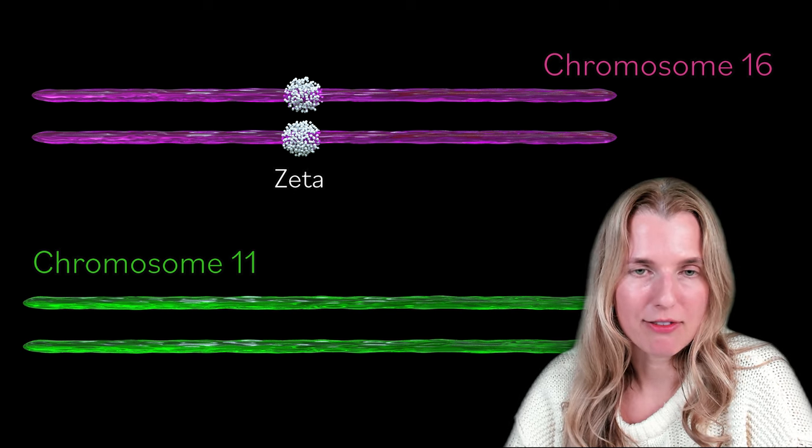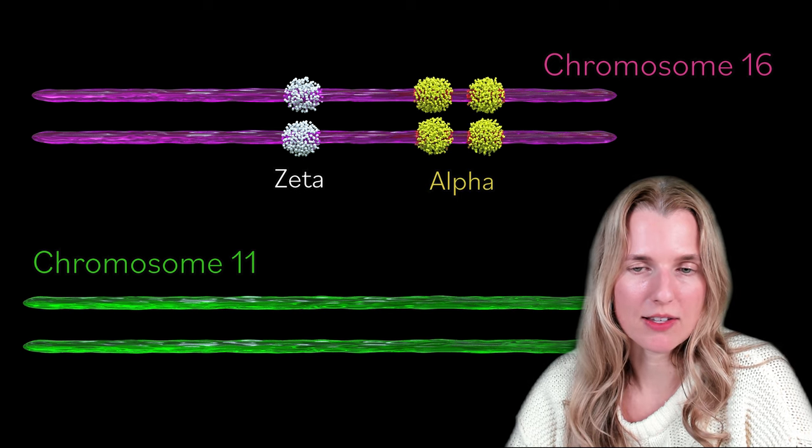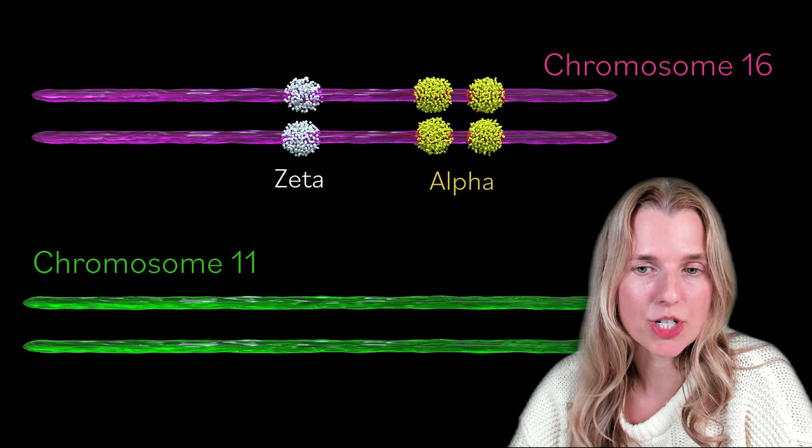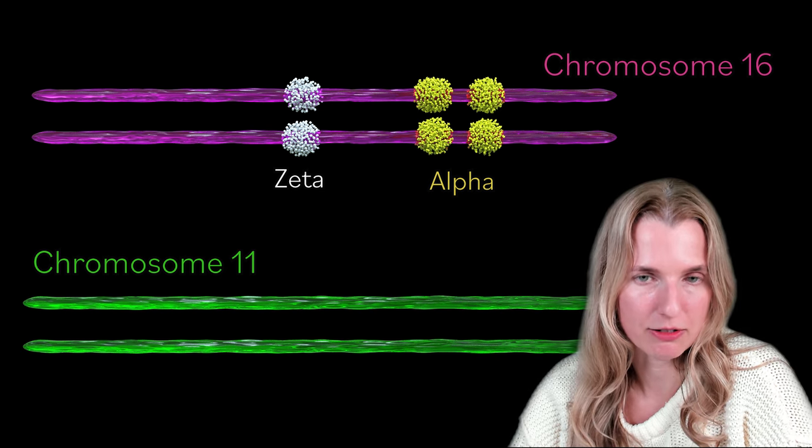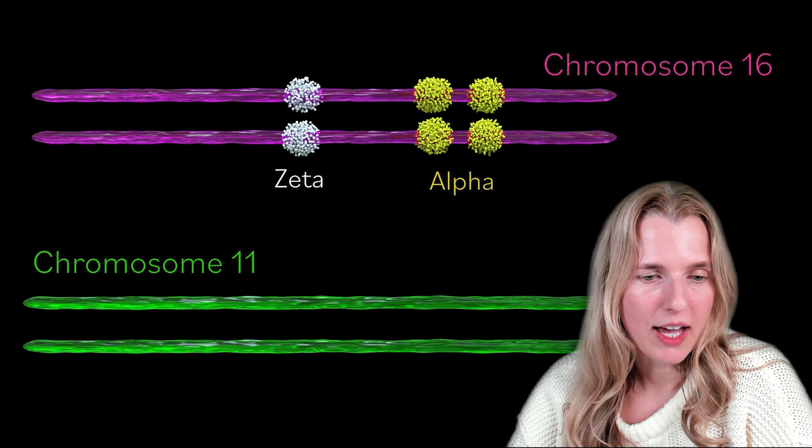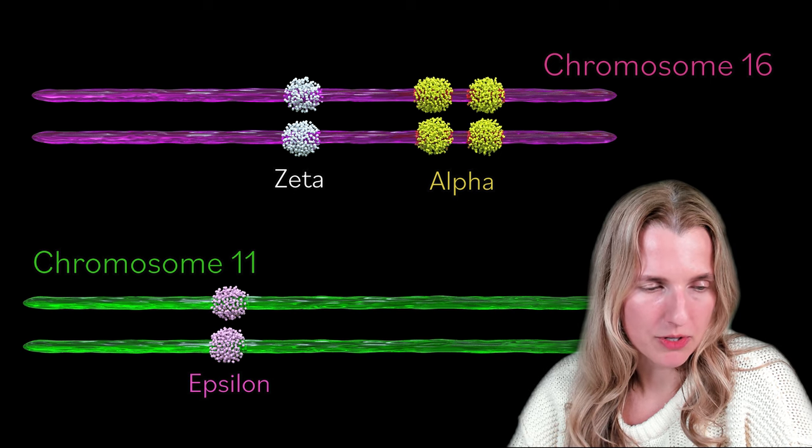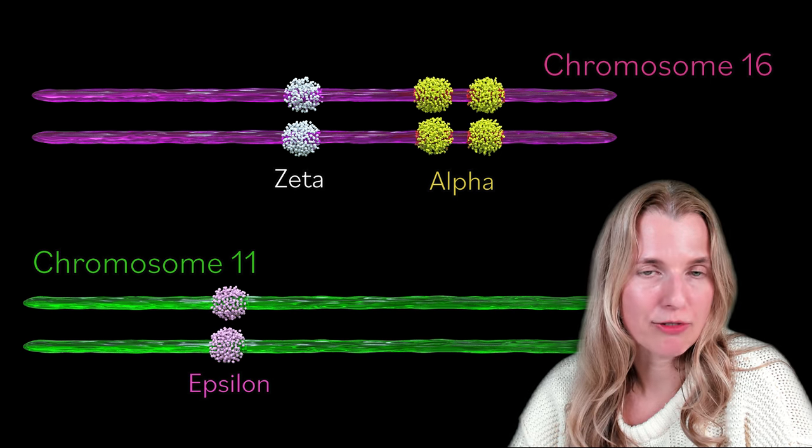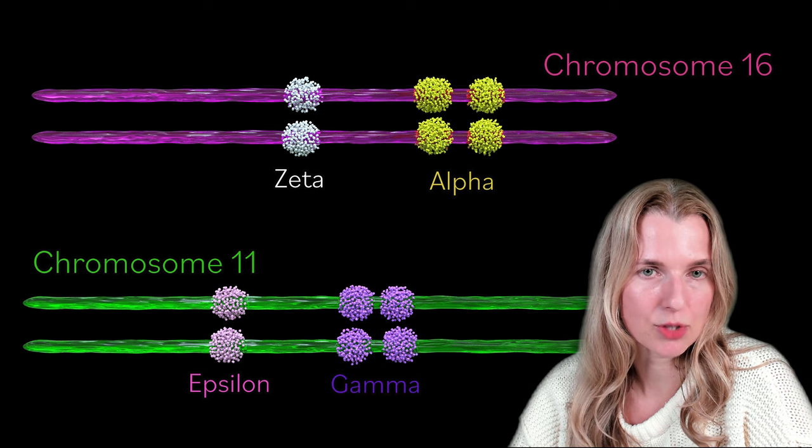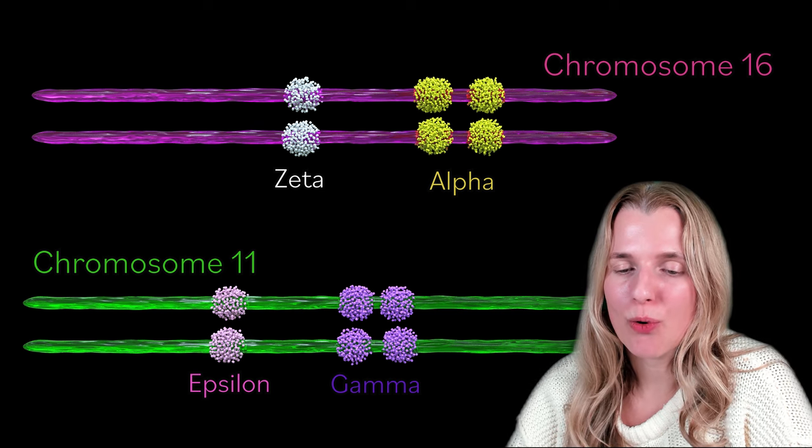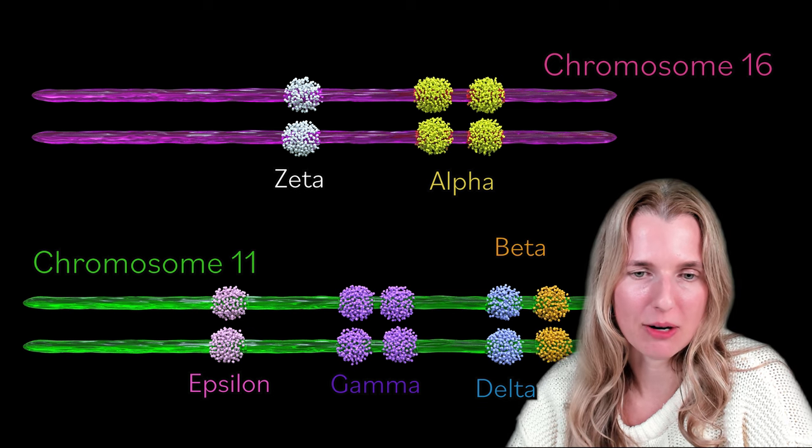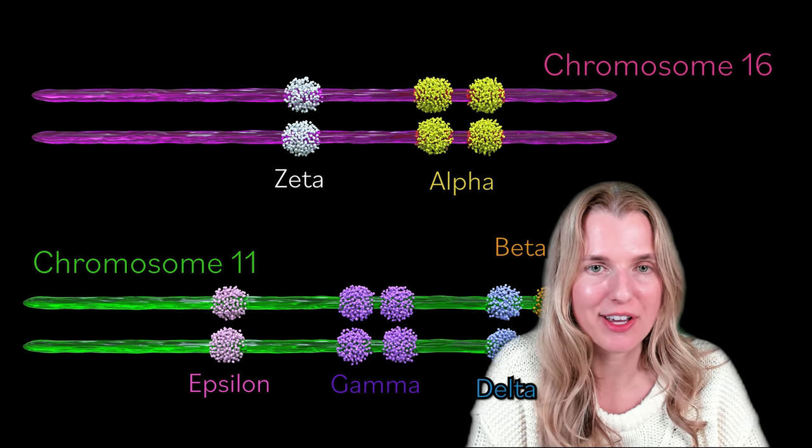Further down, we have our alpha globin genes. So this is what makes our alpha globins. And we actually have two genes on each chromosome. So we have a total of four genes that are involved in making alpha globins. We're going to move down to chromosome 11. We have epsilon down here, one gene per chromosome. Then we have two gammas on each chromosome. So that gives us a total of four gammas total. Next, we have one gene for delta on each chromosome. And then lastly, one for beta. And this is how they are arranged.